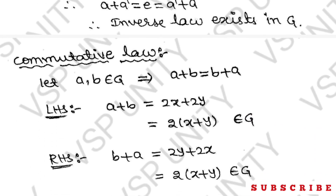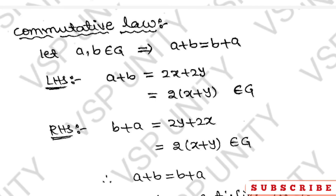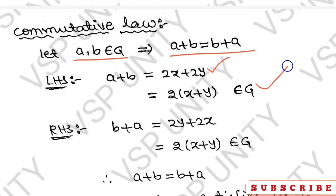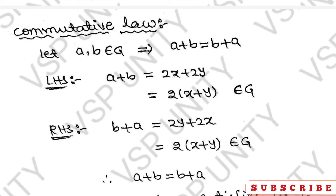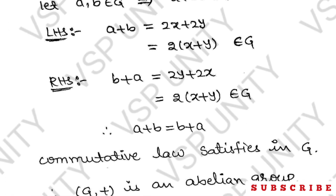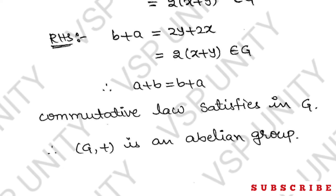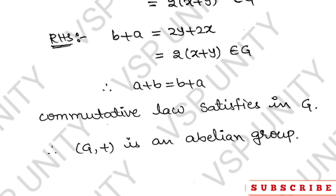Last property: commutative property. If A + B = B + A then (G, +) is an abelian group. LHS: A + B = 2x + 2y = 2(x + y), belongs to G. RHS: B + A = 2y + 2x = 2(x + y), belongs to G. Therefore LHS equals RHS, commutative law satisfied. G satisfies all properties of an abelian group. Hence (G, +) is an abelian group.